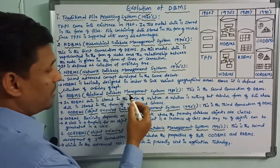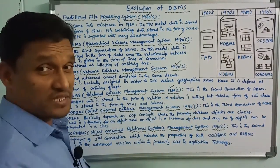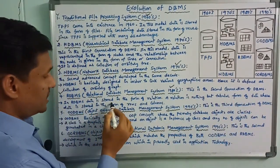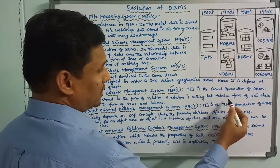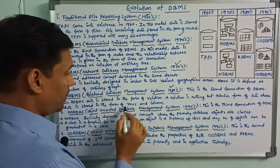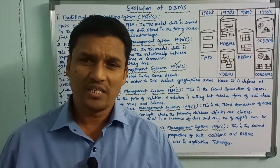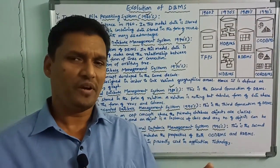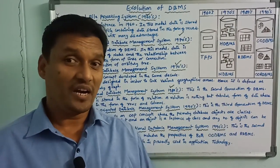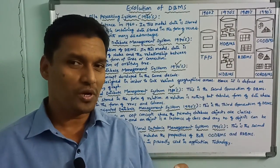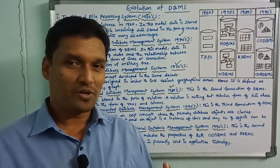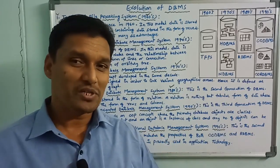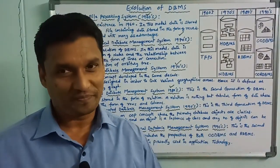RDBMS — relational database management system — is the second generation of DBMS. In RDBMS, data is stored in the form of relations. A relation is nothing but a tabular form of data, where data is stored in the form of rows and columns. While hierarchical stores data as tree structure and network DBMS uses nodes, relational DBMS stores data in the form of tables — a combination of rows and columns.